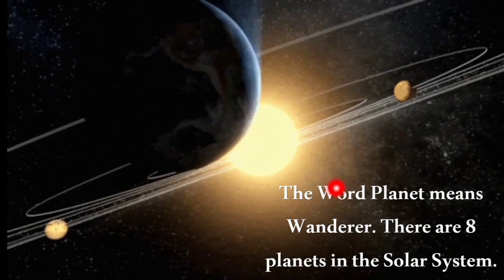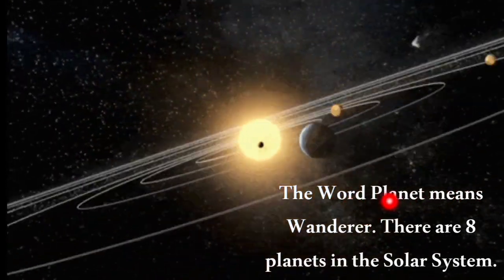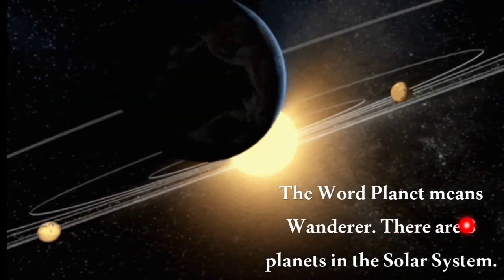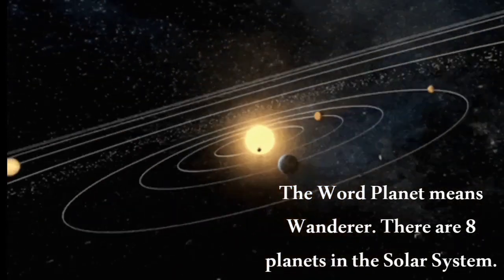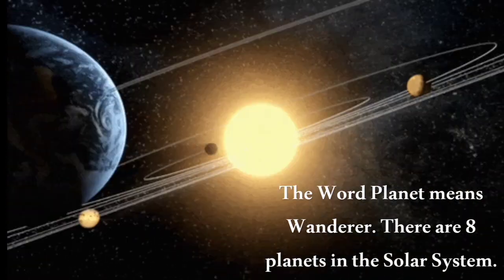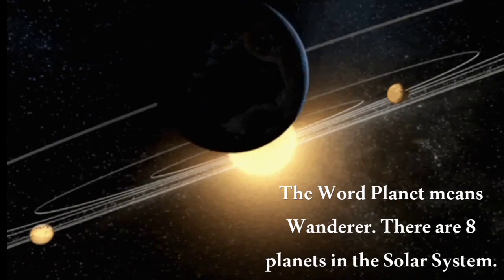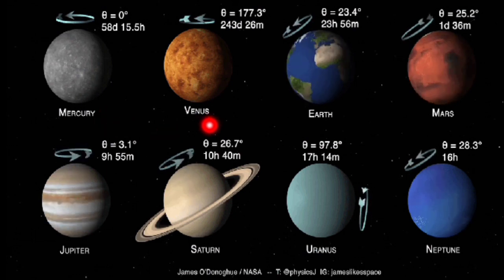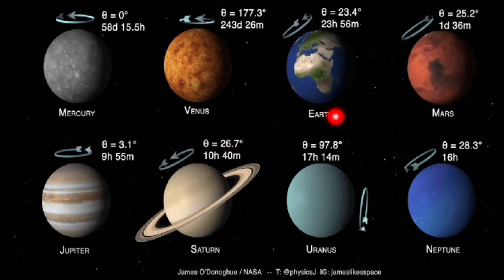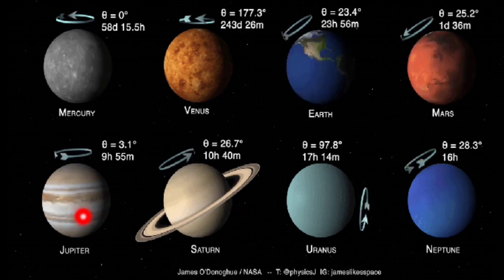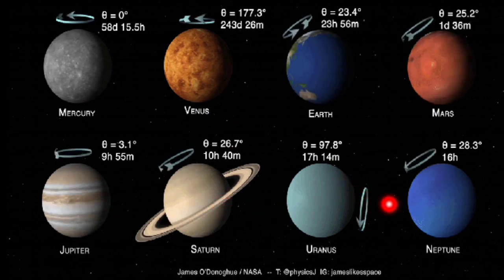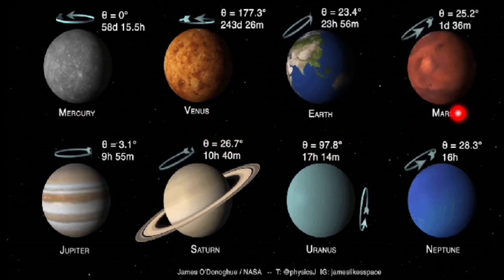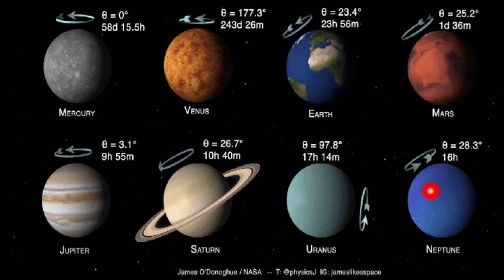The word 'planet' means wanderer. There are eight planets in the solar system: Mercury, Venus, Earth, Mars, Jupiter, Saturn, Uranus and Neptune.